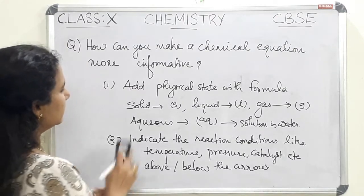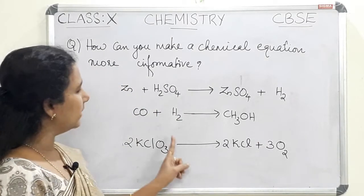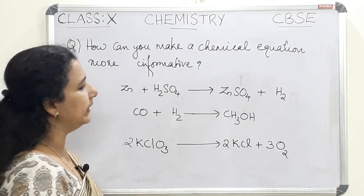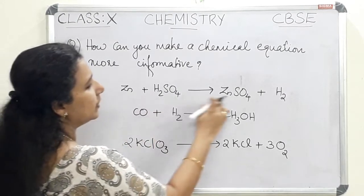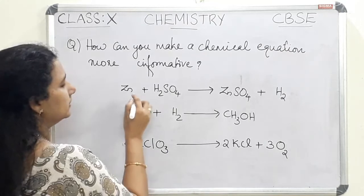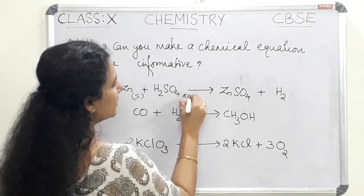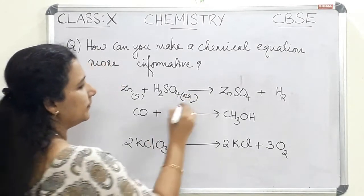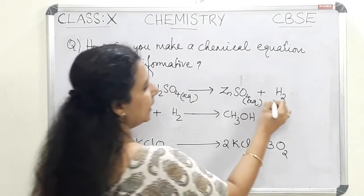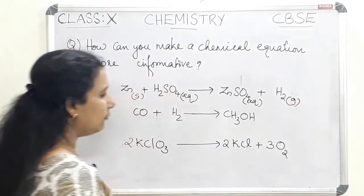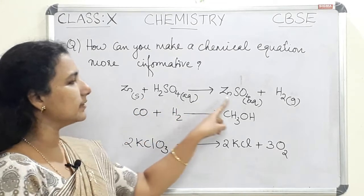Let us see some examples. Consider the equation: Zn + H₂SO₄ gives ZnSO₄ + H₂. We can make this equation more informative by adding physical states. Zinc is a solid, so we add (s). H₂SO₄ is an aqueous solution, so we add (aq). ZnSO₄ is also aqueous. H₂ is a gas, so we add (g).